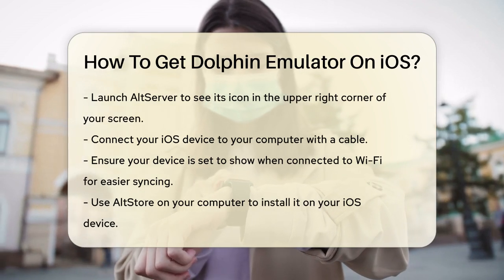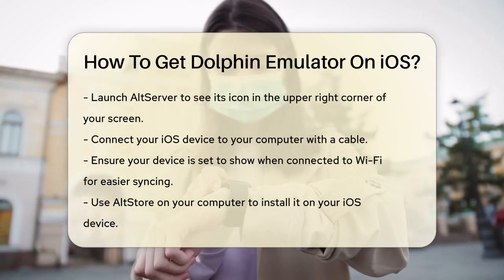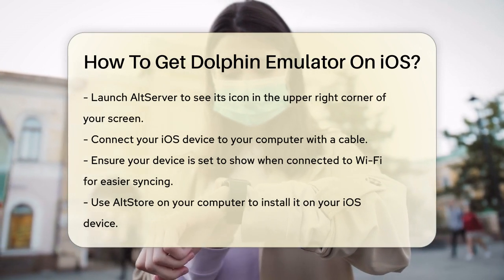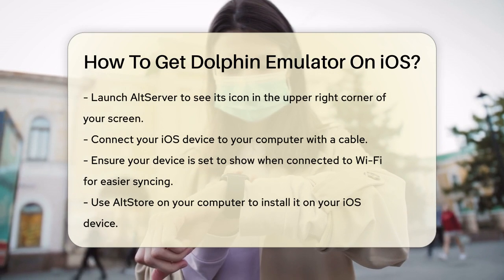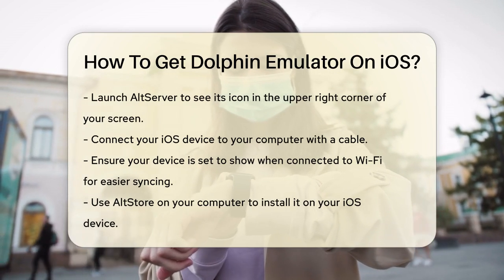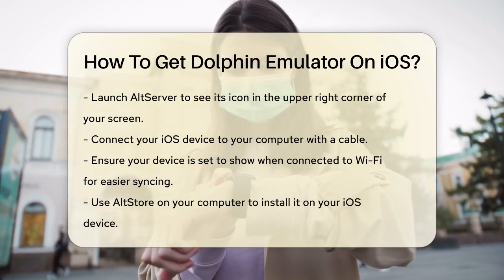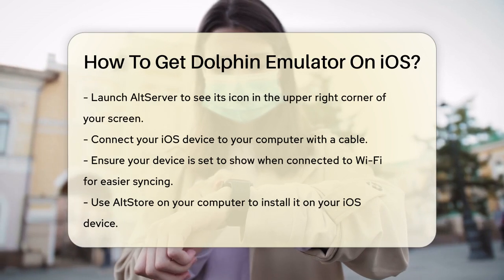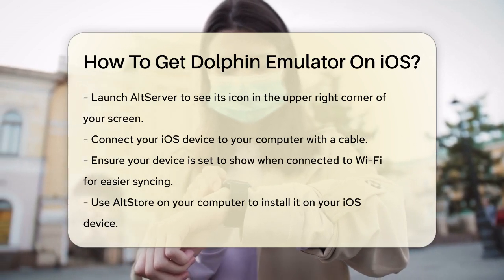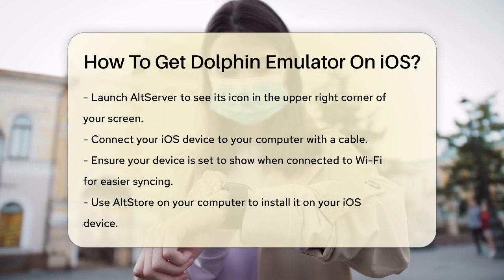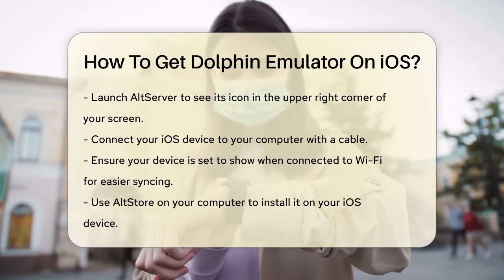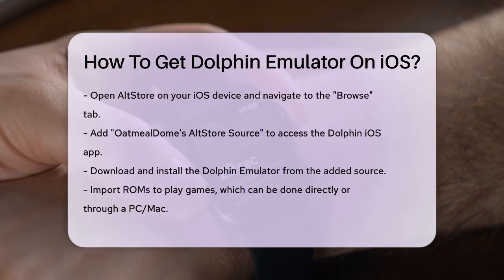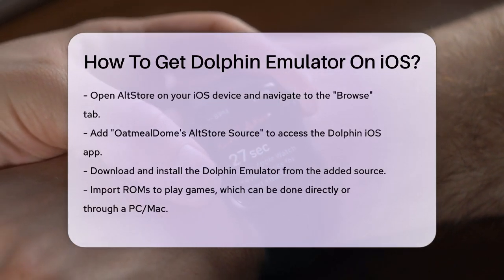Now, open the AltStore on your computer and click the icon in the upper right corner to install the AltStore on your iOS device. Select your device from the list, and after a few moments, the AltStore icon should appear on your home screen. Open the AltStore on your iOS device and go to the Browse tab. Tap Sources in the top right corner and add the source called Oatmeal Dome's AltStore source.